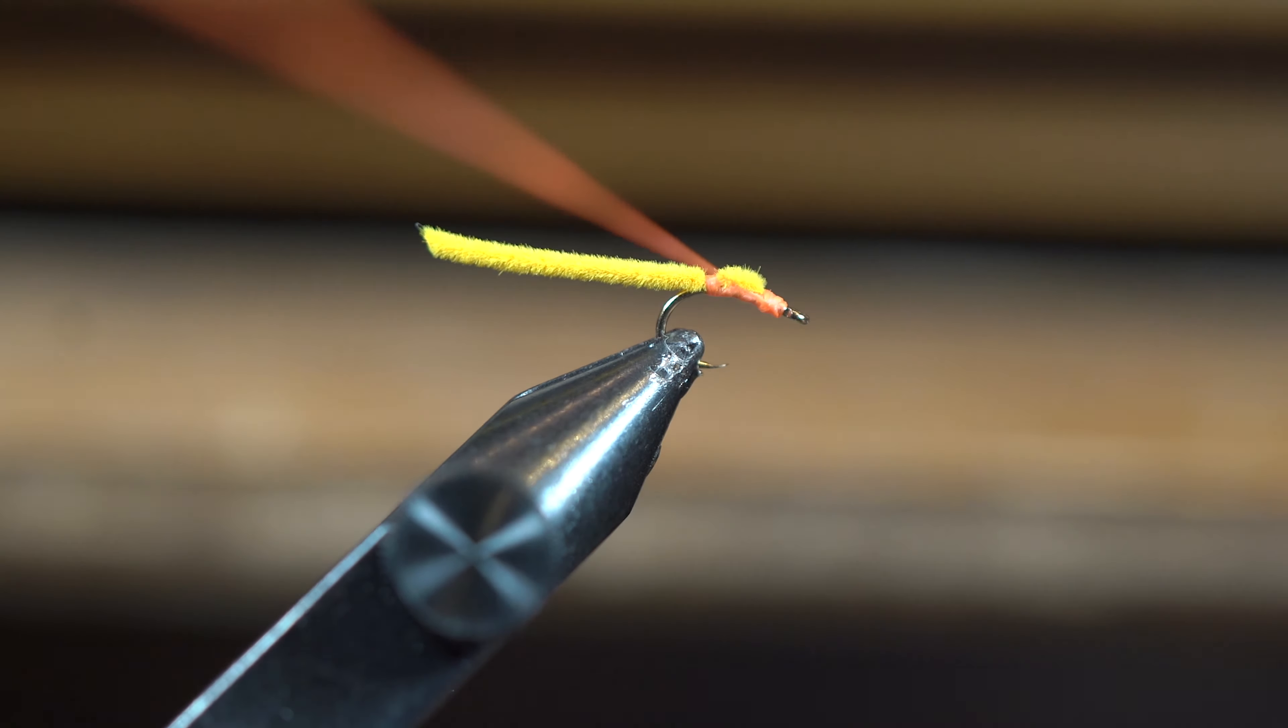Especially if I'm not catching them on the big San Juan worms, I'll go quite a bit smaller and try this, and usually I can pick up some fish on it. That, my friends, is a simple little worm pattern called the Micro Worm. We appreciate you watching our YouTube channel—please like and subscribe. We hope to see you on the water someday. Thank you.